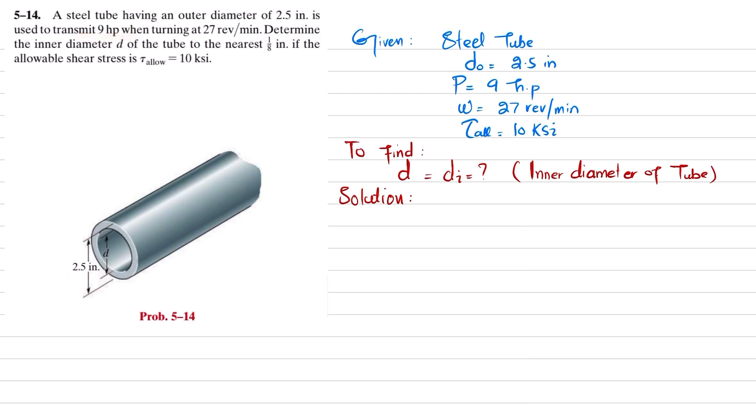9 horsepower and turning at 27 revolutions per minute. So what we have to do is determine this internal diameter for this steel tube. So let's start with the solution.